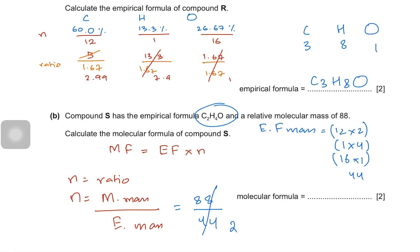Empirical formula was C2H4O. N was 2 because we just found that. So it's going to be C4H8O2.